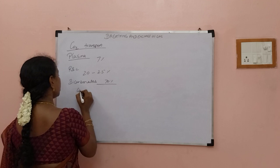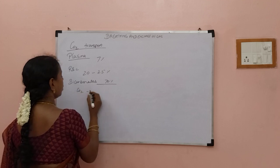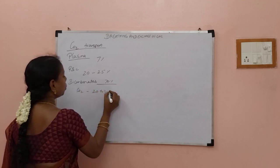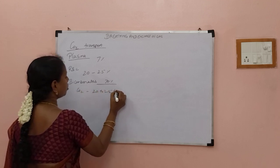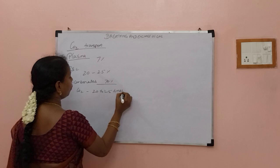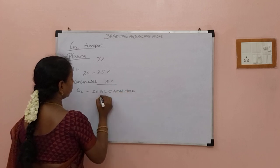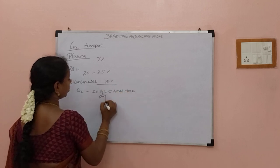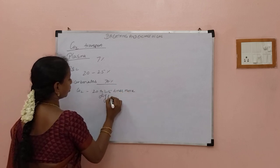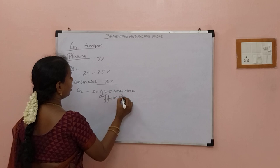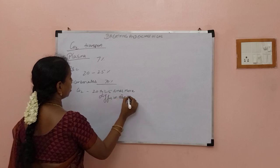Carbon dioxide has 20 to 25 times more diffusion capacity than oxygen.